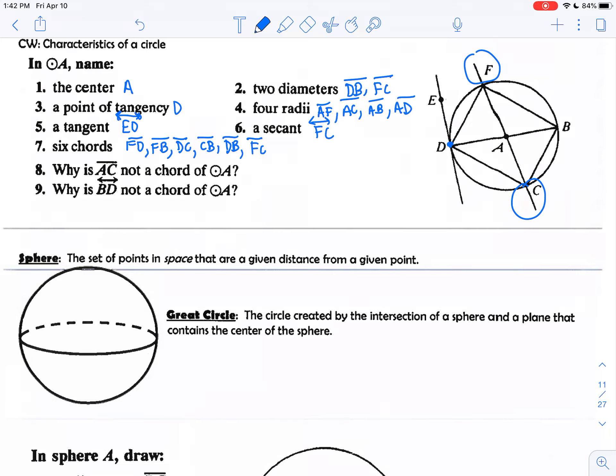Question eight: Why is AC not a chord of circle A? If you look at AC, you notice that this point is the center and it doesn't fall on the circle. Point A is not a point on the circle. It's the center, but it's not a point on the circle. A chord has two points on the circle. It's a segment that connects two points on the circle. Why is line BD not a chord of circle A? Well, that should have answered our question. It's not a segment.